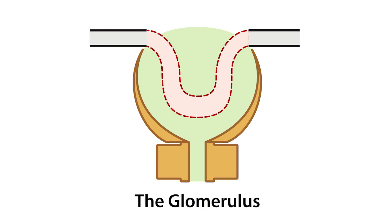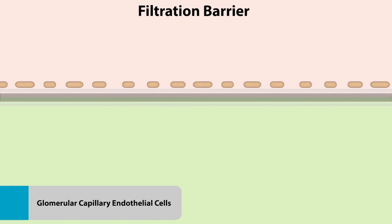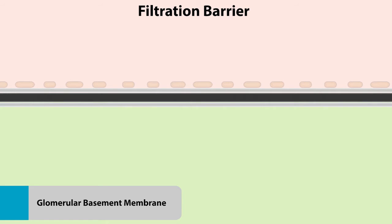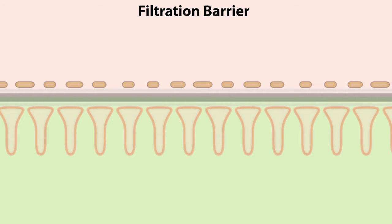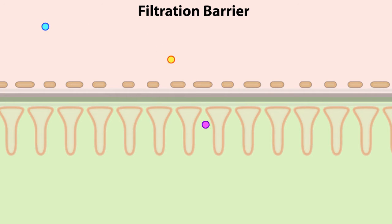Red blood cells, plasma proteins, and white blood cells are not normally found in urine. To explain why, we take a brief look at the filtration barrier, which consists of the glomerular capillary endothelial cells, the glomerular basement membrane, and the epithelial podocyte foot processes. The glomerular capillary endothelial cells restrict red and white blood cells while permitting macromolecules, electrolytes, solutes,